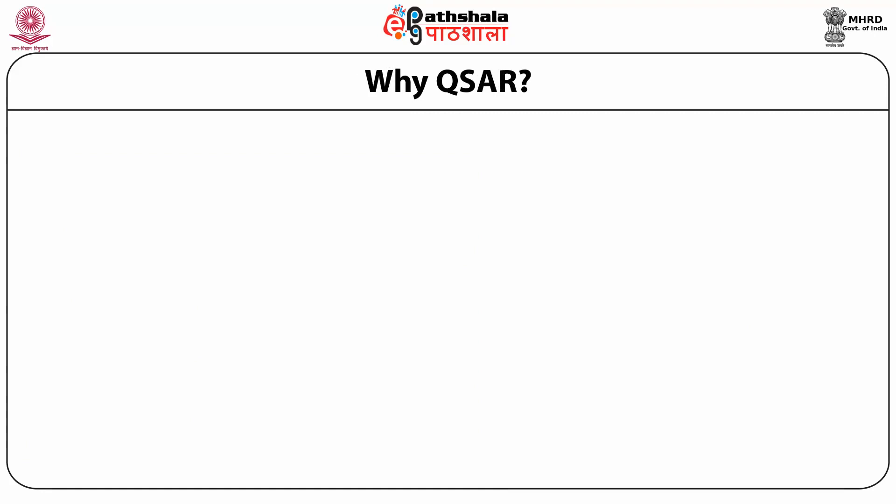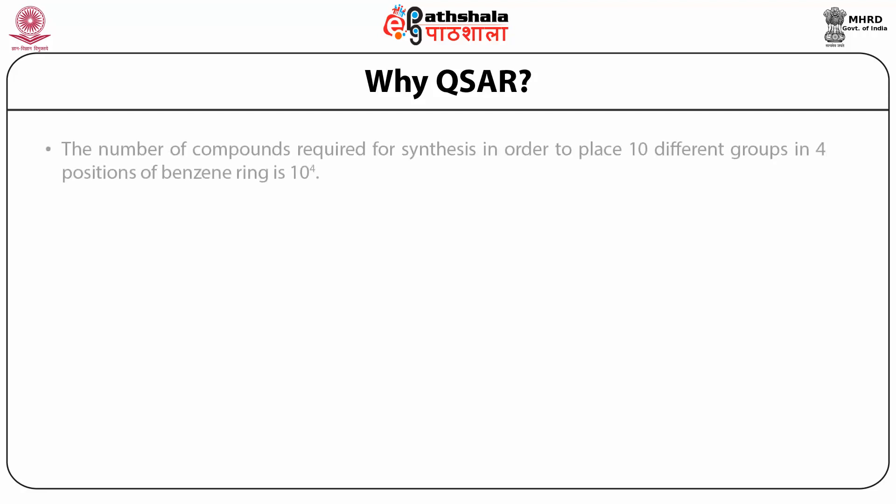This module of QSAR or QSPR will deal with the reason why one needs QSAR, and then how to do the methods and use the techniques. Why QSAR? If we take the number of compounds required to be synthesized for a benzene ring with 10 different groups and 4 different positions, we would land up having at least 10 to the power 4 numbers of combinatorially done synthetic chemistry. That is an extraordinary job for all the synthetic chemists to make those compounds.